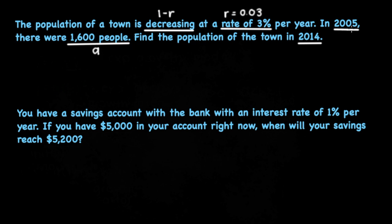And we can set the year 2005 to t equals 0 so that we can easily find the population of the town in 2014, which would mean that t is equal to 9.